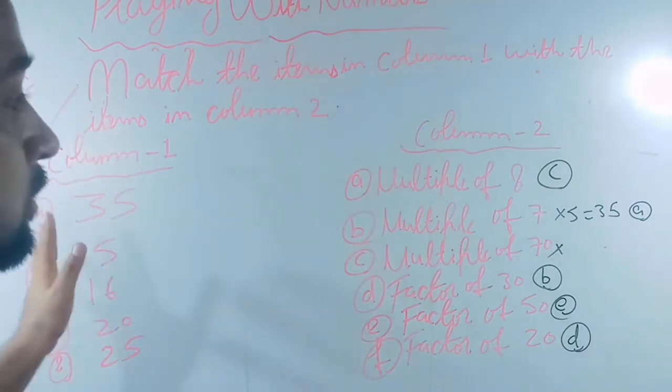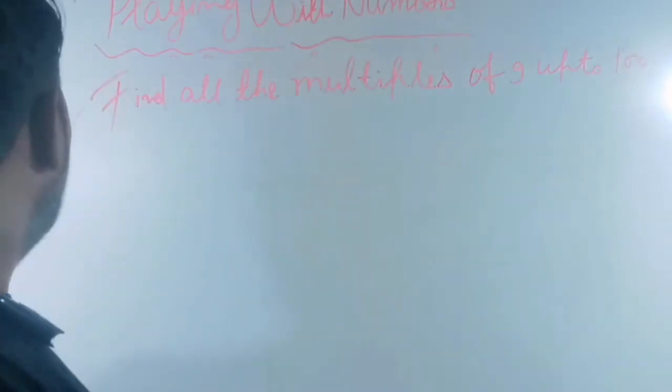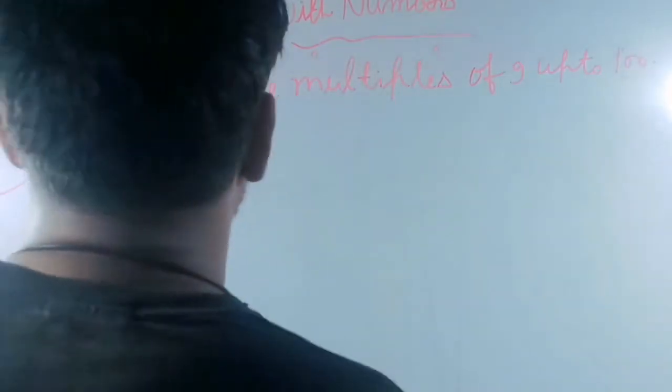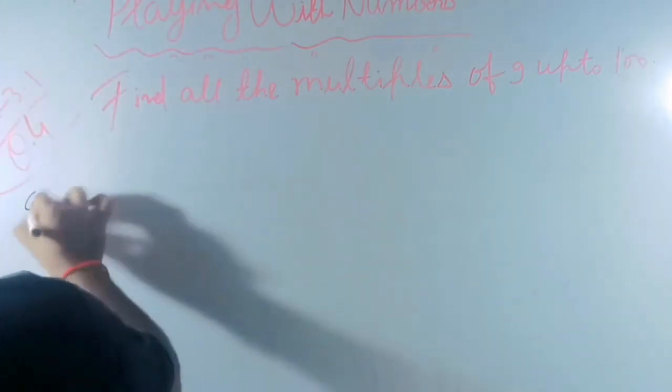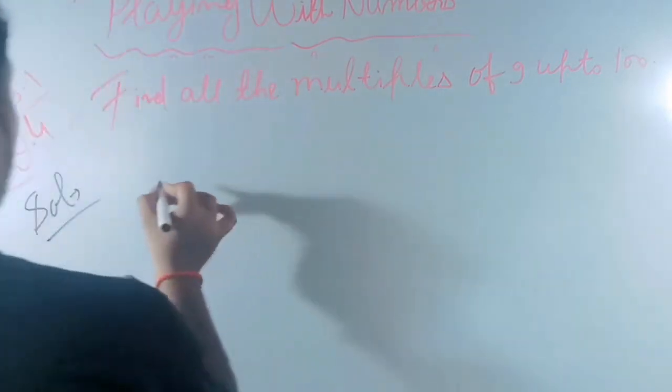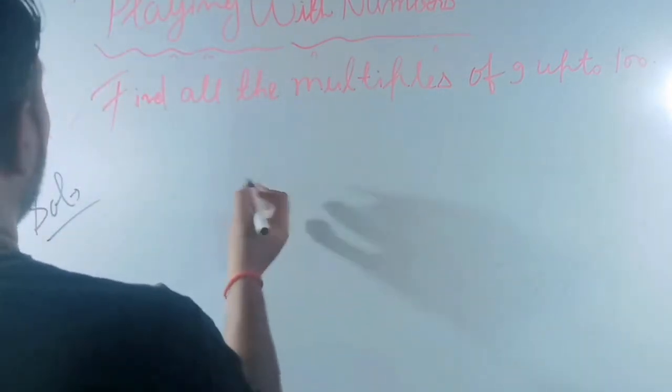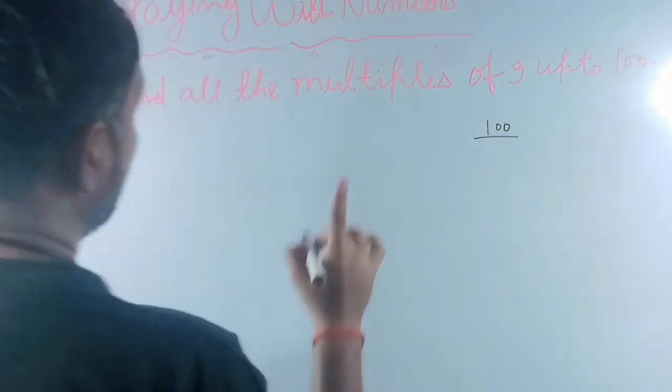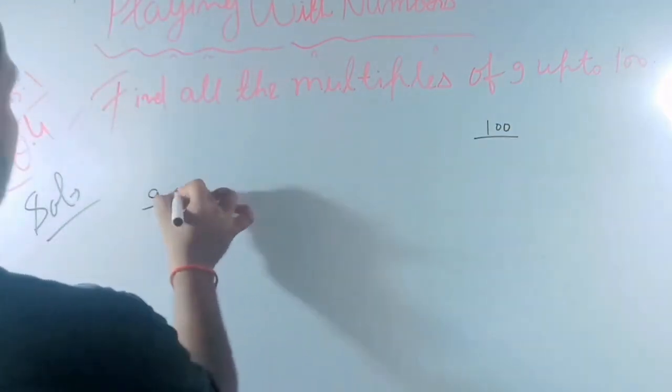So we have found the matching of these numbers. Now next question: find all the multiples of 9 up to 100. Same method we will follow. So multiples of 9 up to 100, we have a limit, we cannot cross 100.